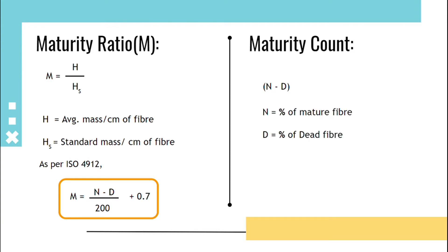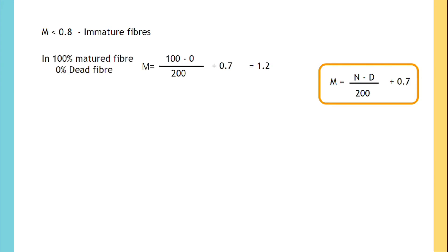We know that the formula: in 100% matured fiber and 0% dead fiber, we will get maturity ratio M = (100-0)/200 + 0.7 = 1.2.